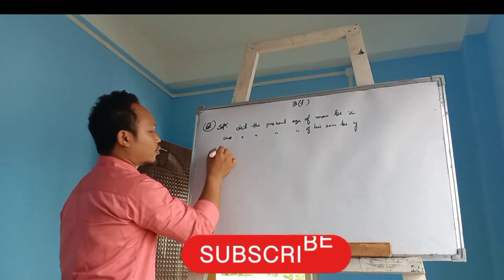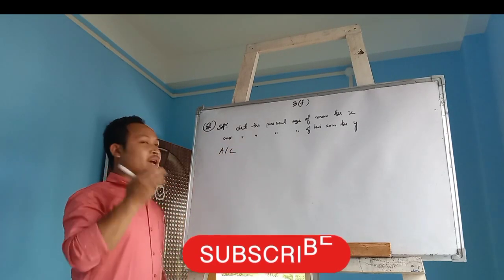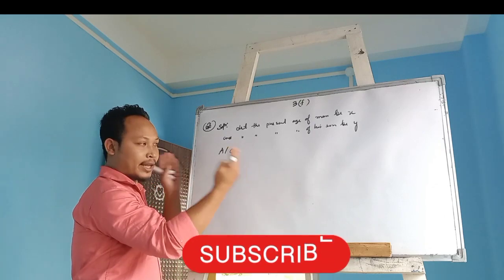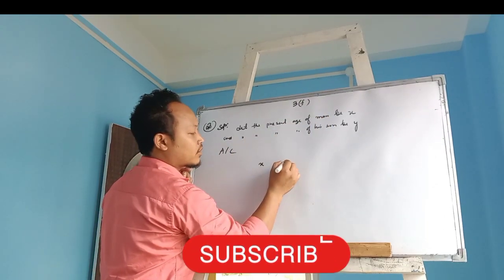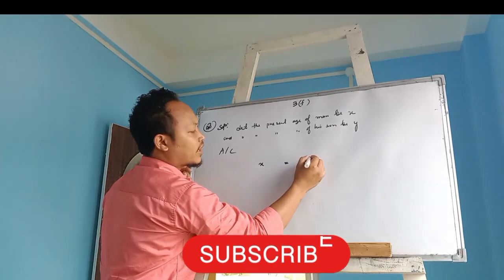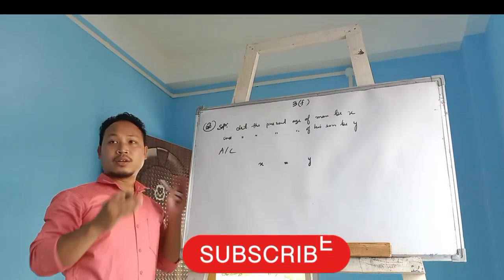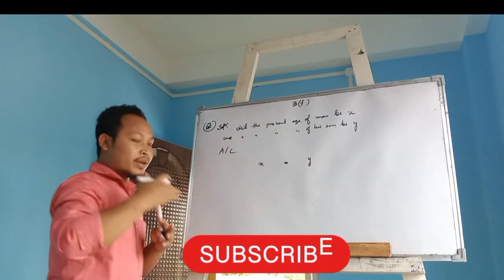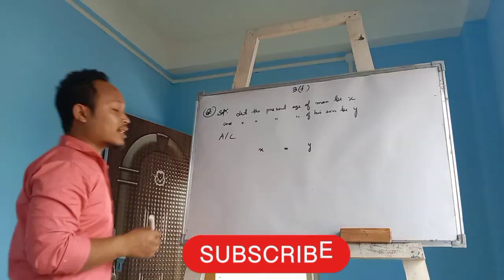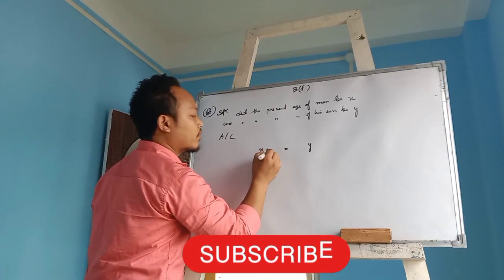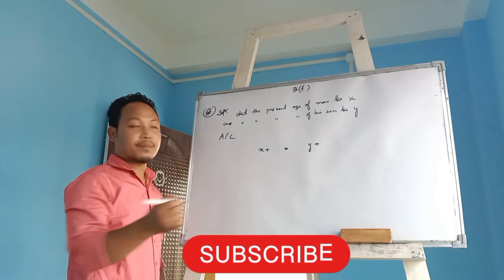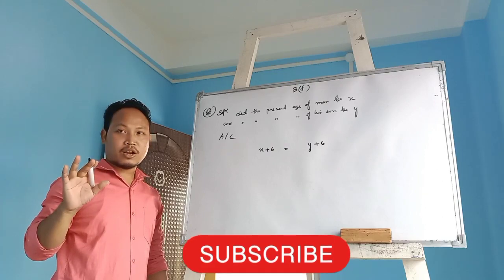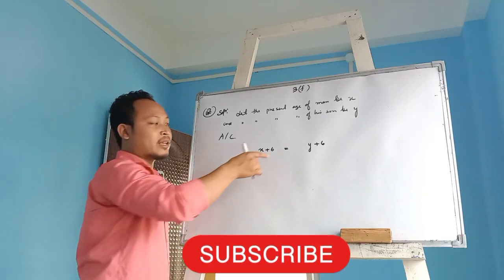So according to the question, we have to write... Always you have to write the father's age on the left side. Father's age x is equal to son's age on the right side. But in the question they said what? Six years hence means plus six years. Father also plus six years, son also plus six years.